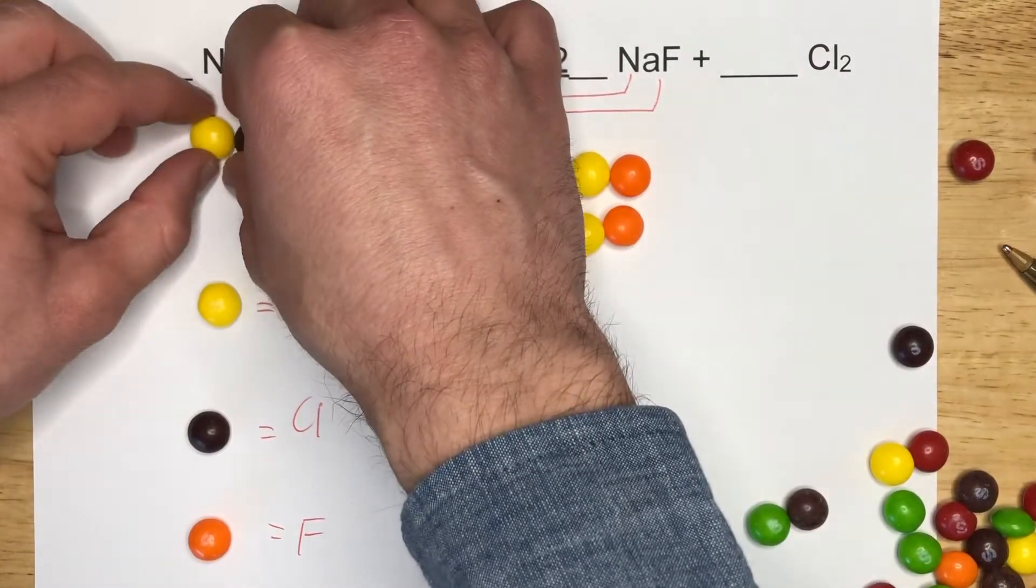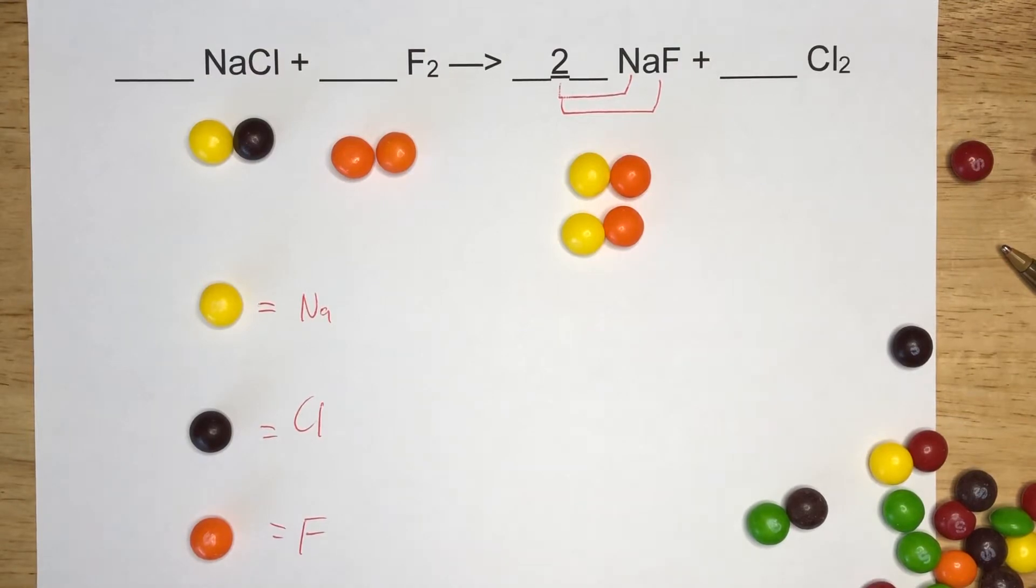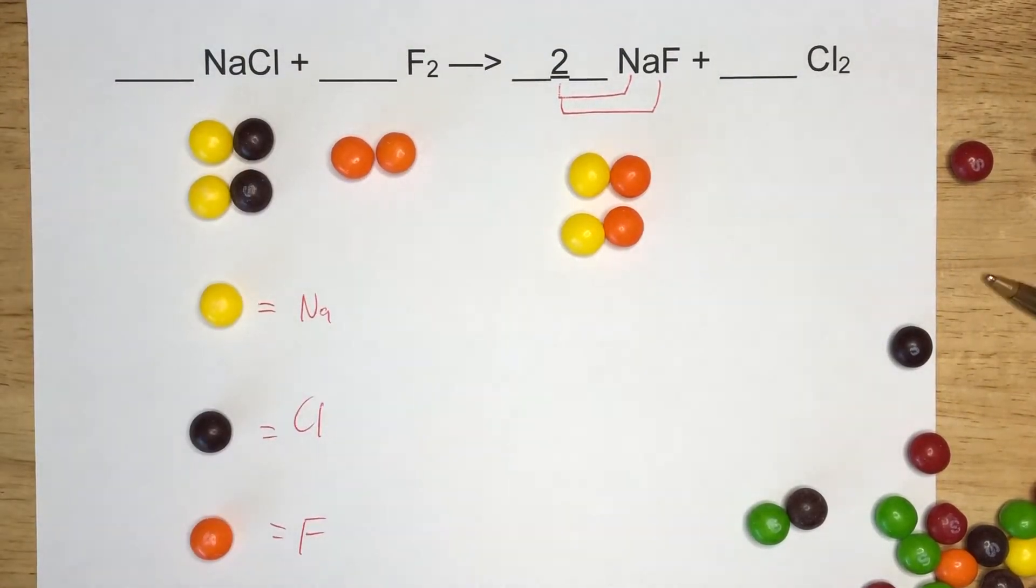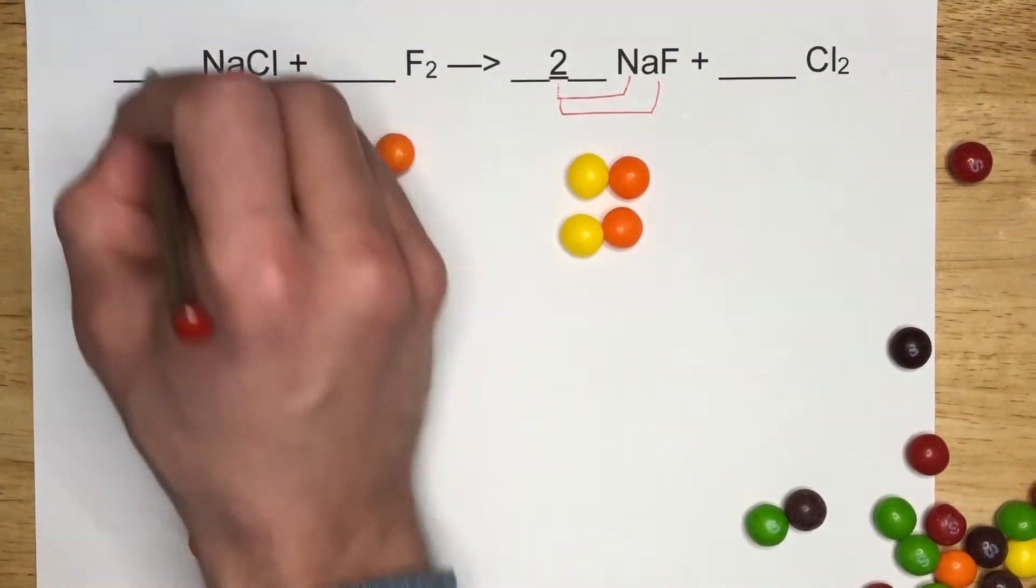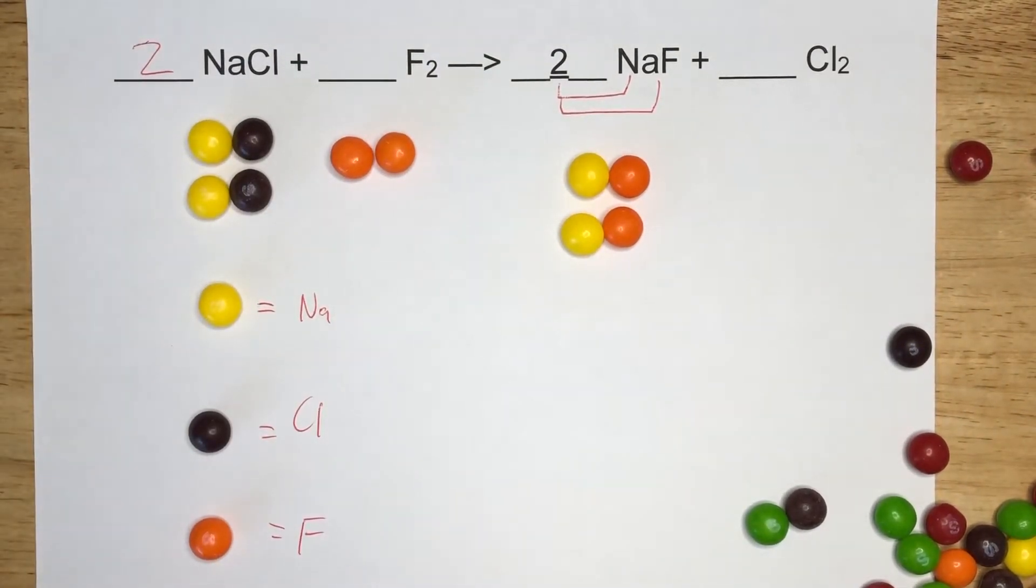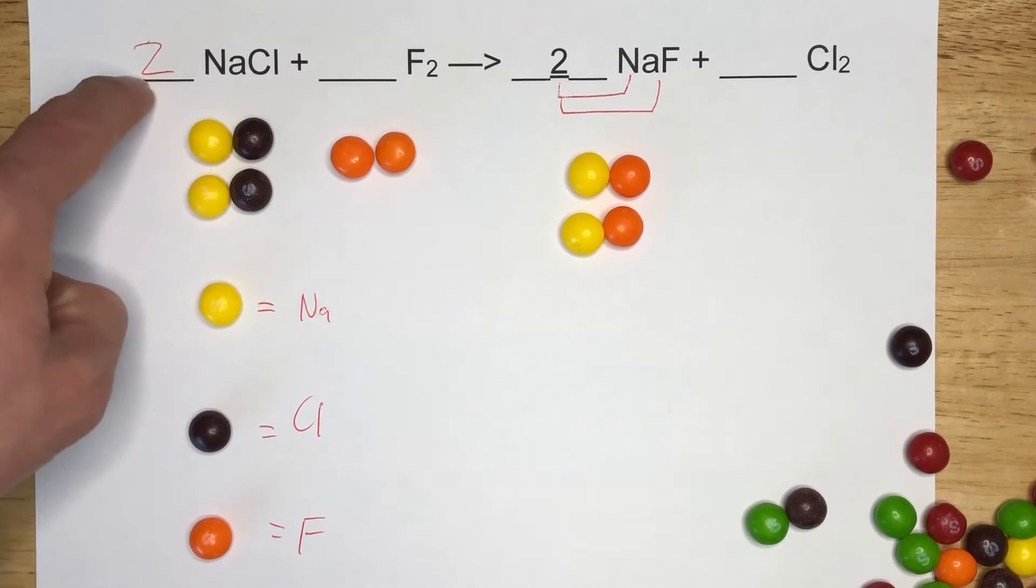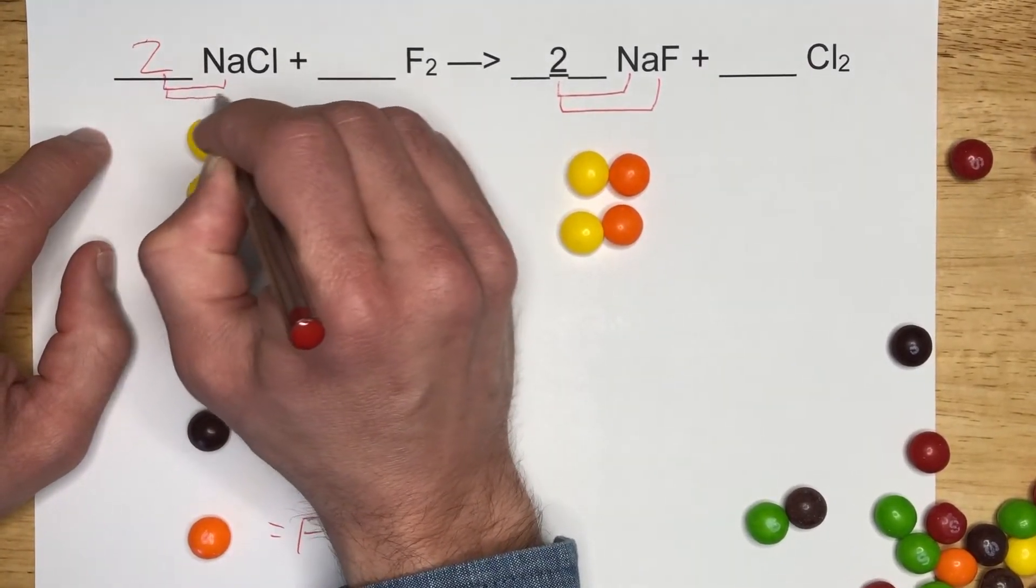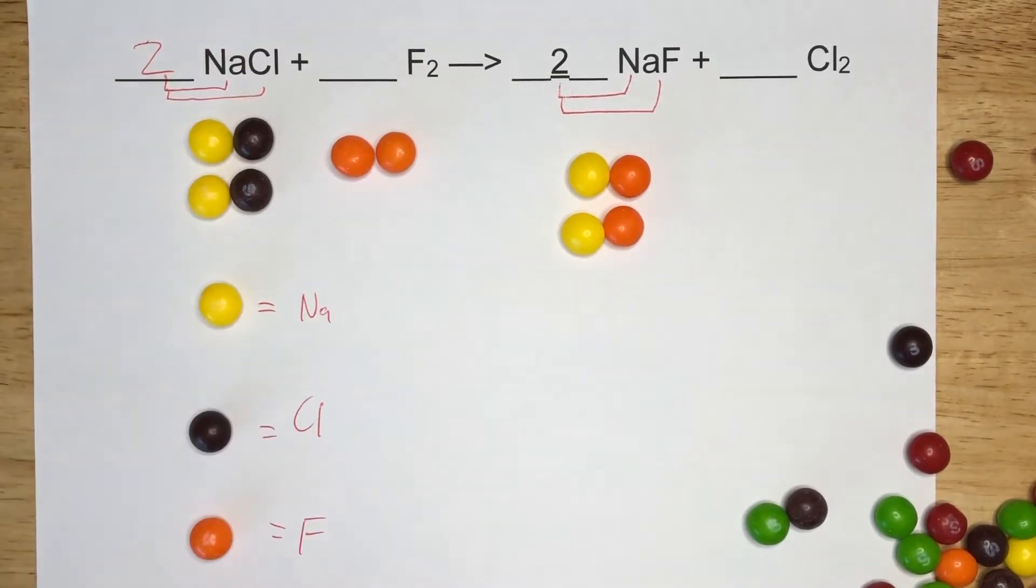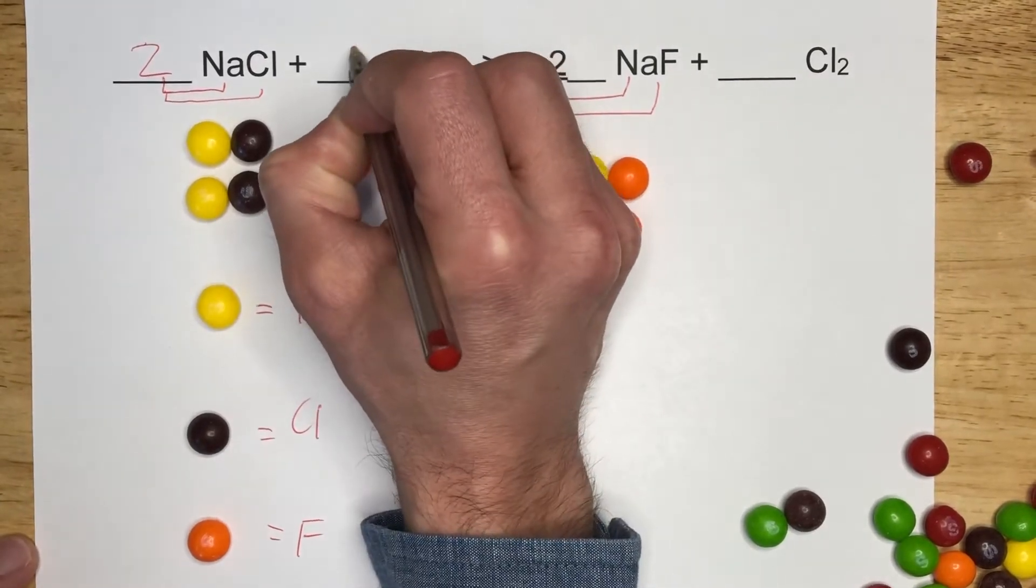We need not one but two Na's, so that means we need two NaCls. You can't just throw one Na atom in there; you have to make sure that it's put together with its pair, with its other partner in the compound. When we do that, we have to use coefficients to show that, so we'll put a two here. We are balancing the equation. The two applies to the Na and to the Cl. You can think of it like multiplication: two times one Na is two, two times one Cl is two. If you want, you can just put a number one here to show that it is not changing.